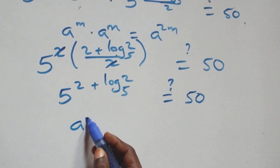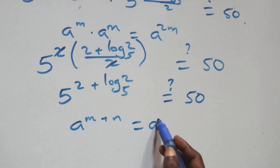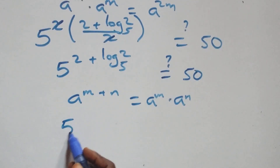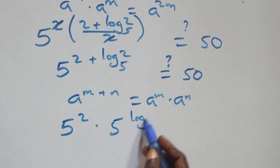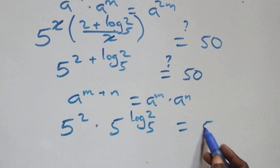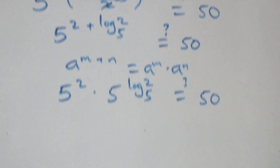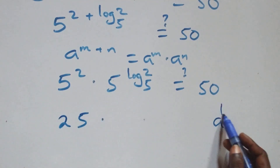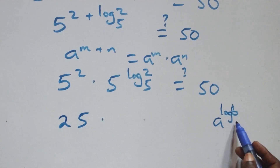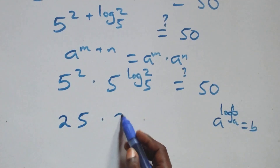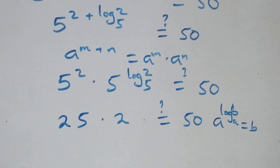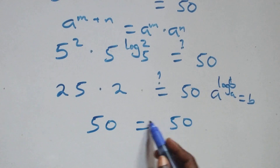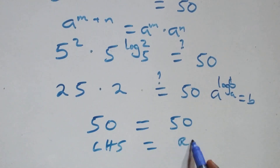This follows: when we have a raised to power m plus n, this is the same as a raised to power m times a raised to power n. So we have 5 squared times 5 raised to power log base 5 of 2, equals 50. Here 5 squared is 25. Also, using the identity a raised to power log base a of b equals b, we have 2. So 25 times 2 equals 50, which of course is 50. Left-hand side equals right-hand side.